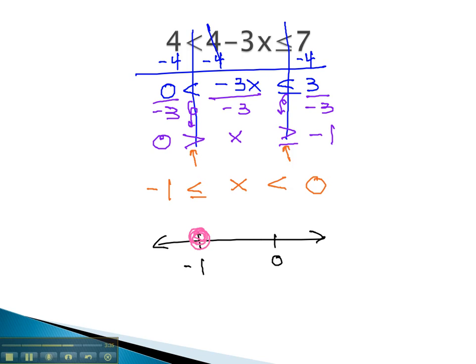At negative 1, we need a closed dot, because it's or equal to. At 0, we need an open dot, because it's strictly less than. And the x is in between them, in between those two values.